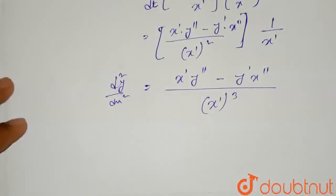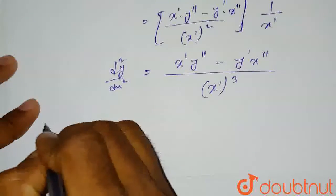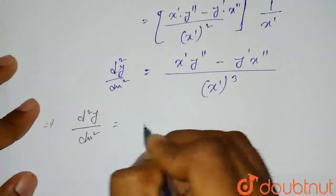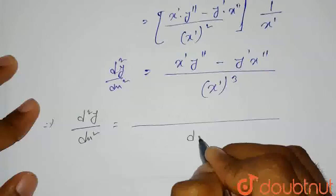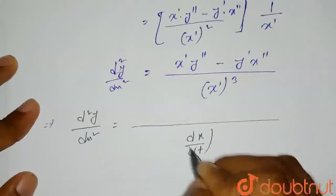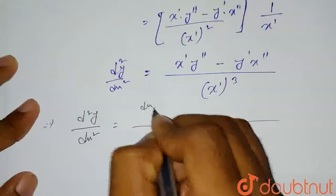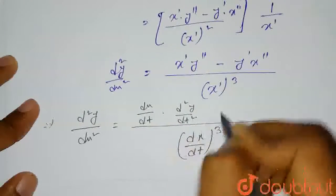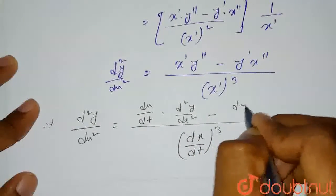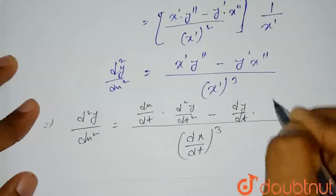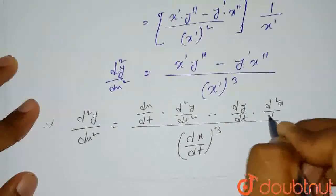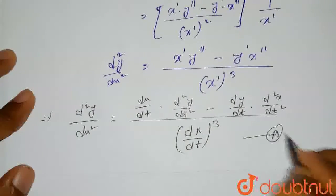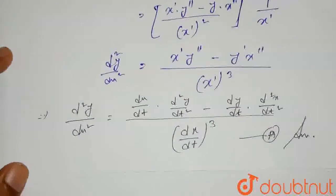If we write it in the form of dx/dt and dy/dt, d²y/dx² will equal (dx/dt)³ in the denominator, and in the numerator dx/dt multiplied by d²y/dt² minus dy/dt multiplied by d²x/dt². This is our first option, option A. This is the correct solution for this question. Thank you.